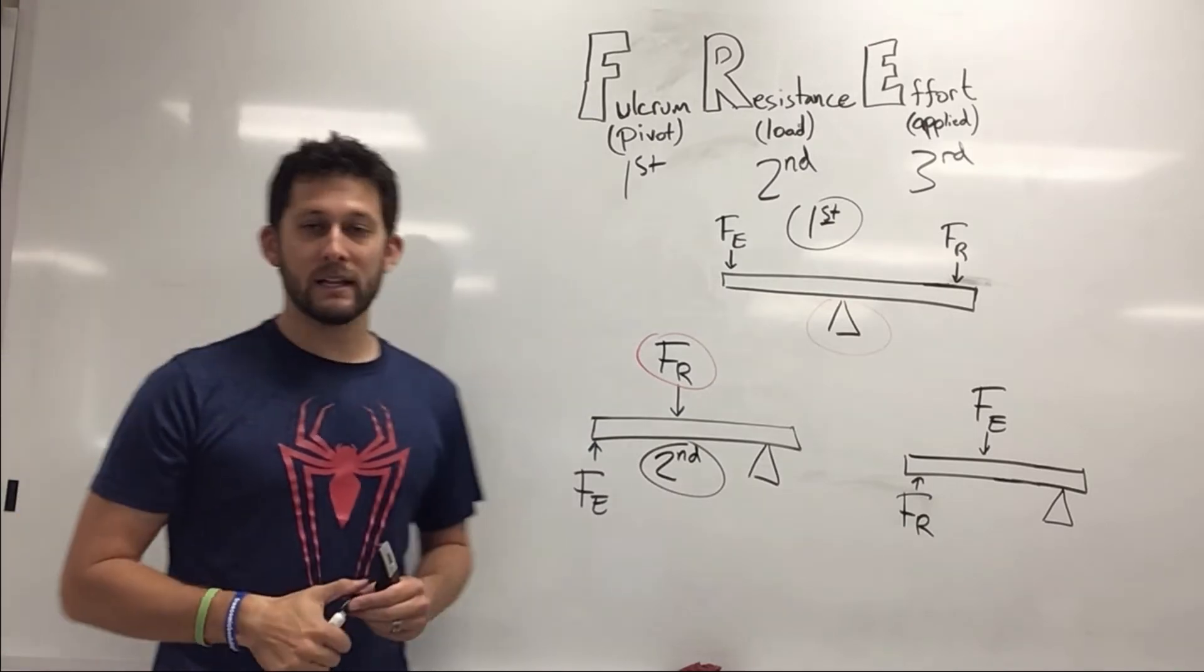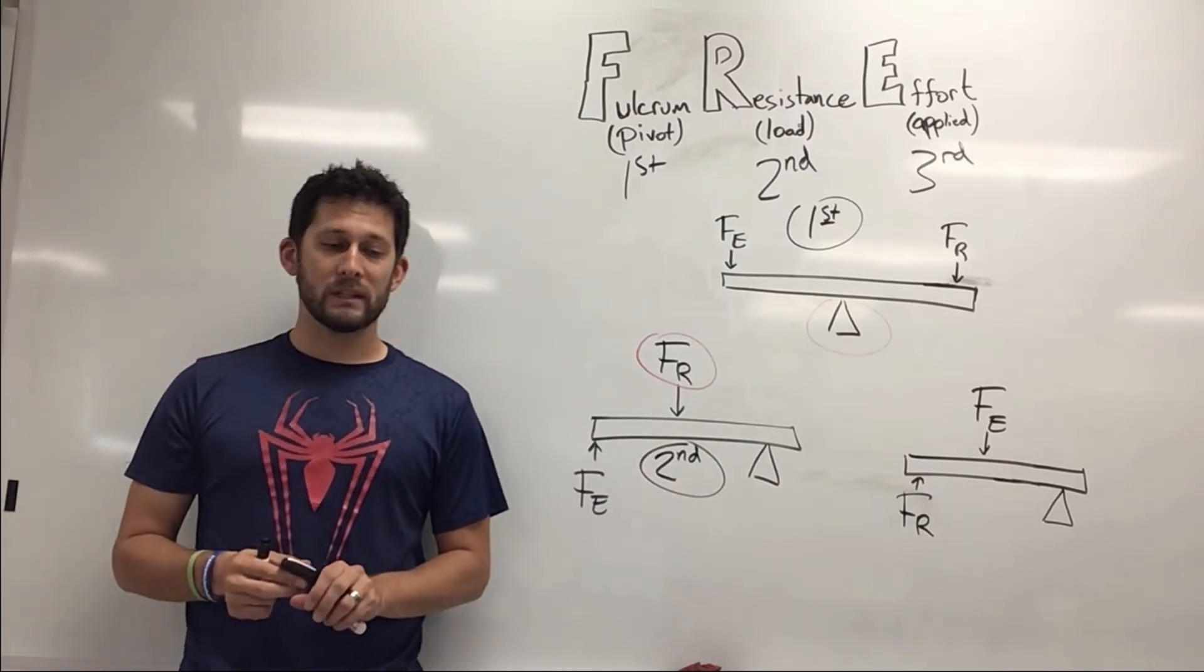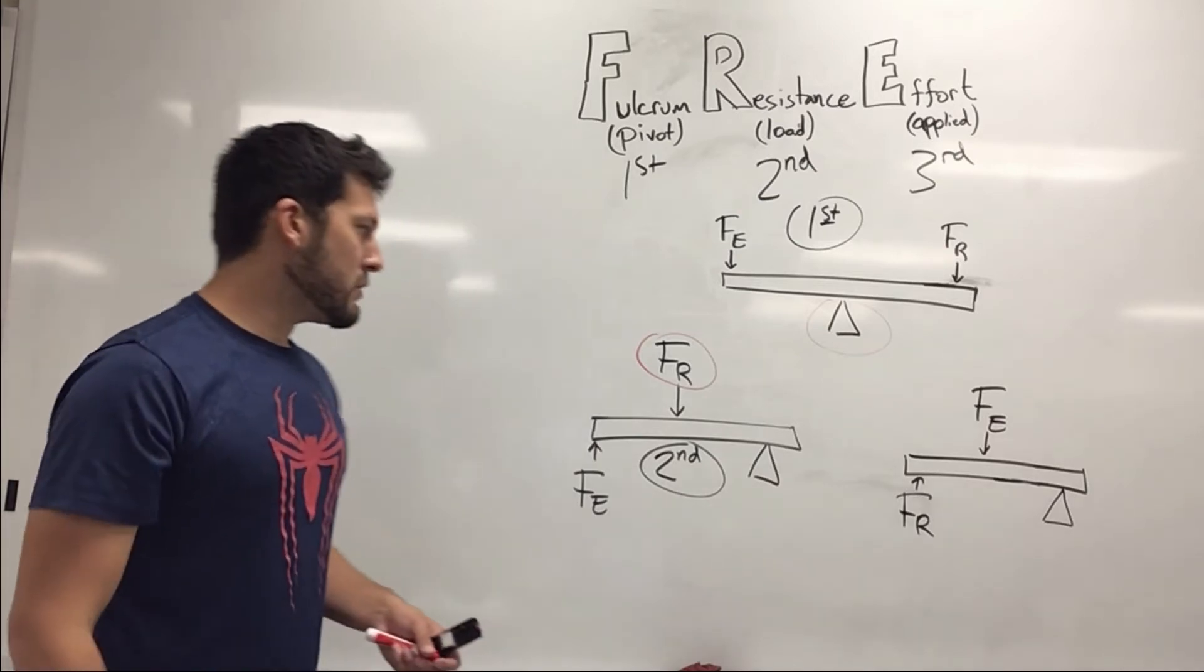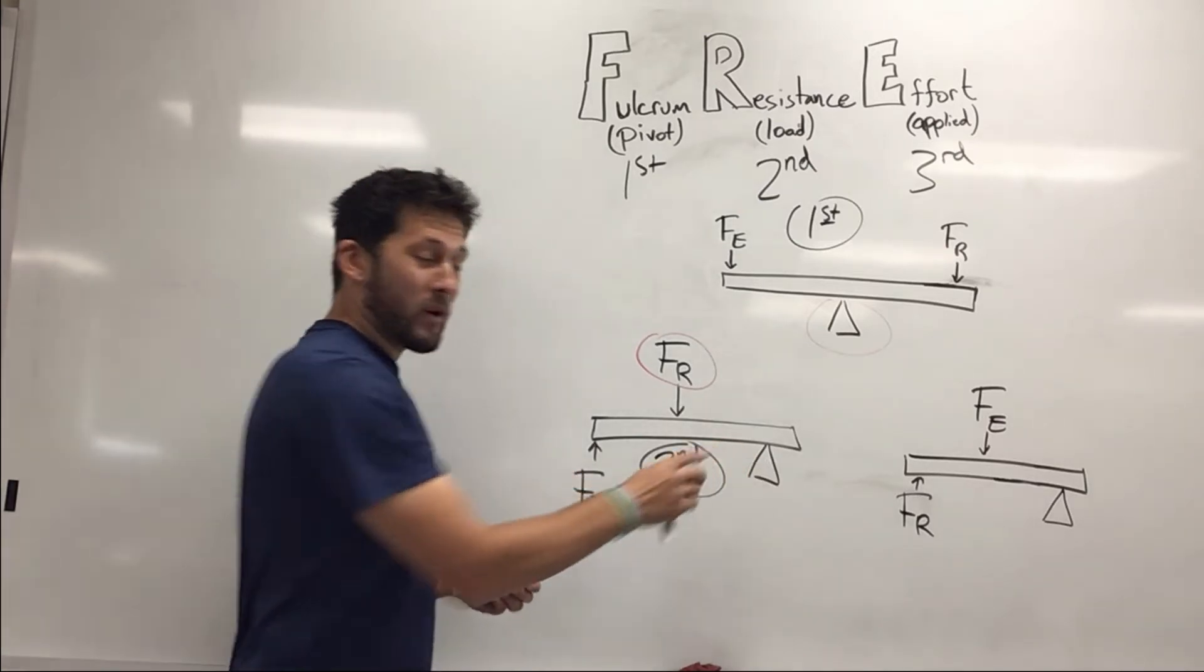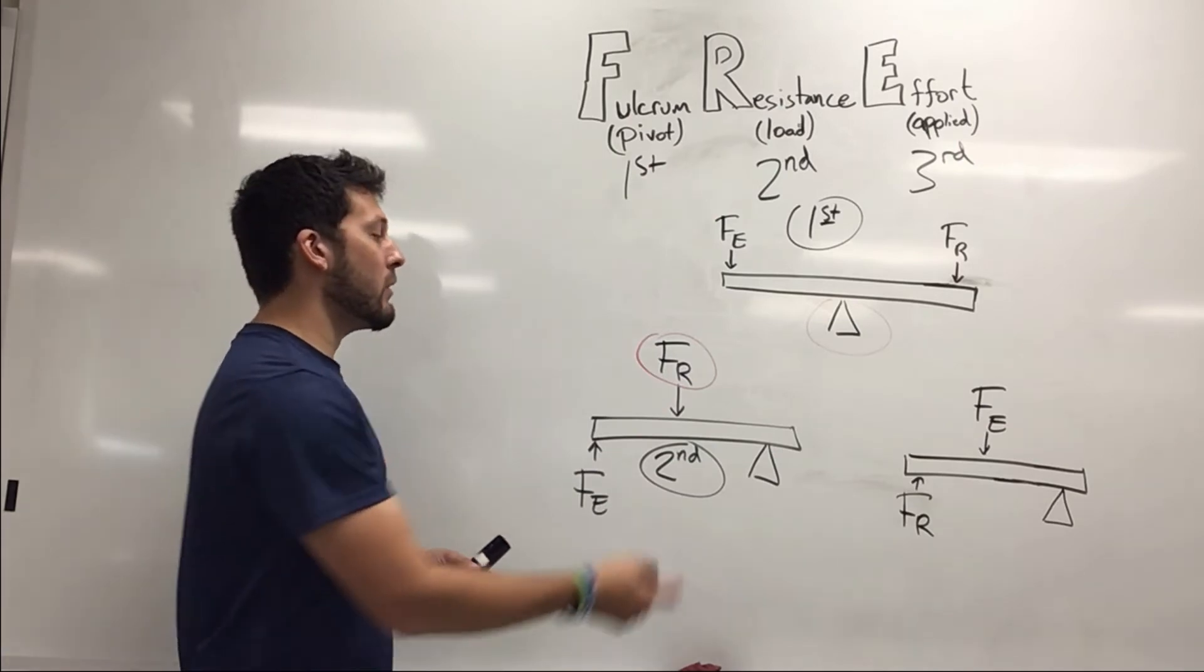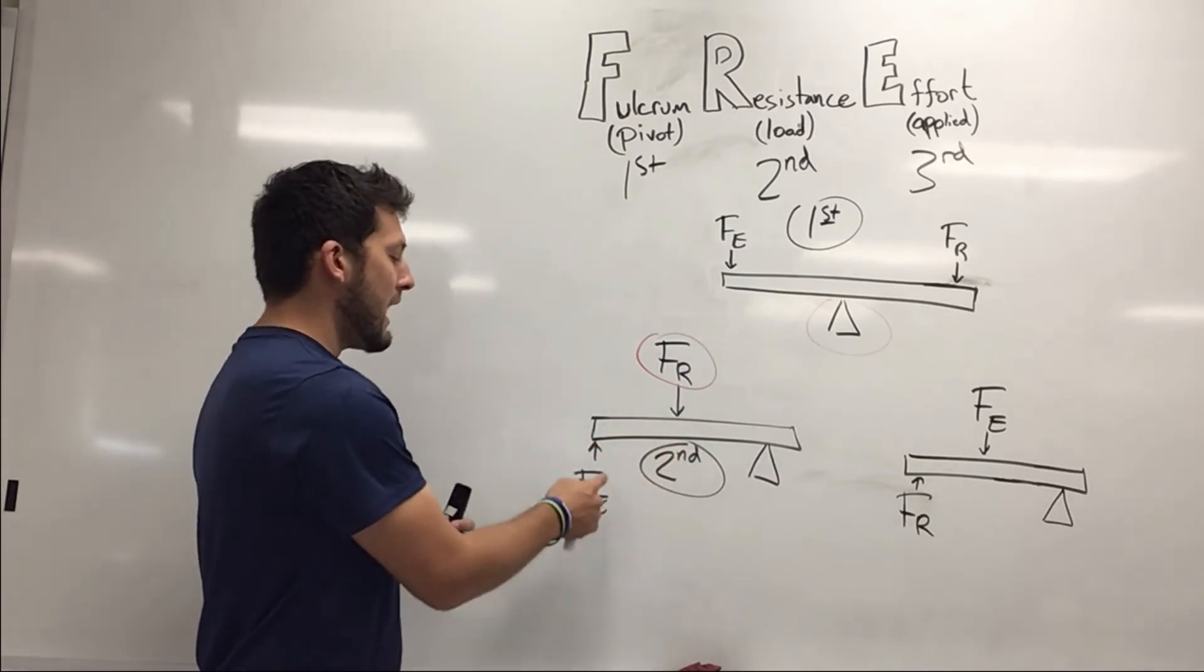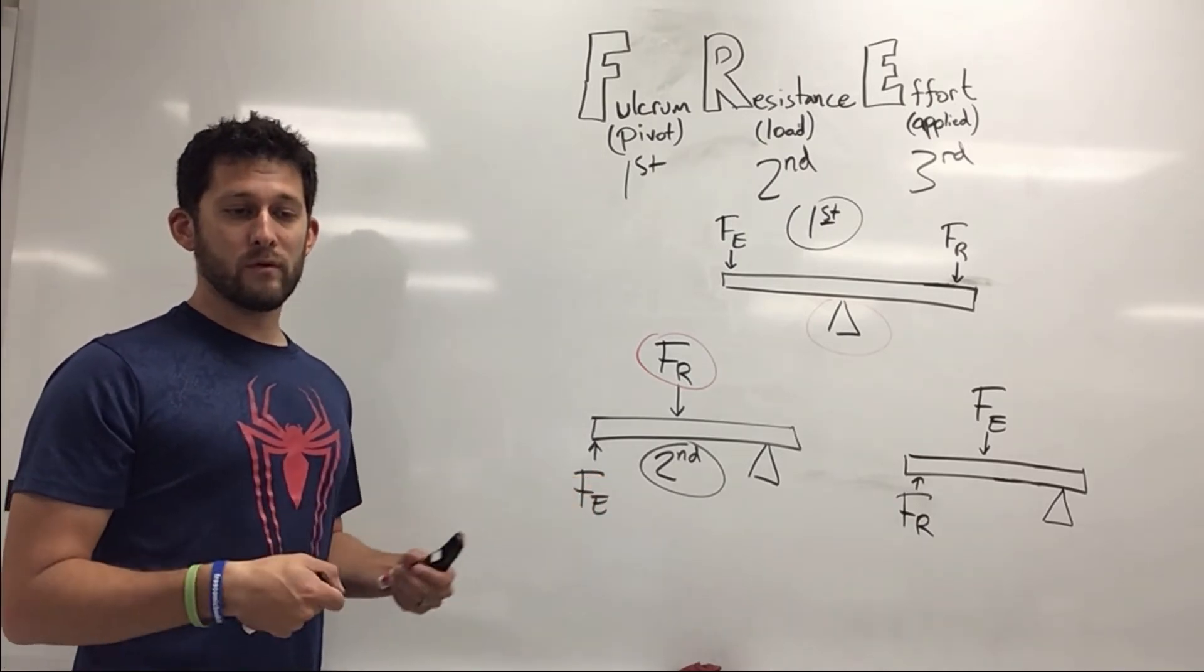Second class lever right there. Now some examples, what that might be is something like a wheelbarrow. If you have your pivot, which are typically your wheels on the wheelbarrow, your resistance force is whatever you're loading inside that wheelbarrow, and then your effort is what you are pulling up and actually moving.